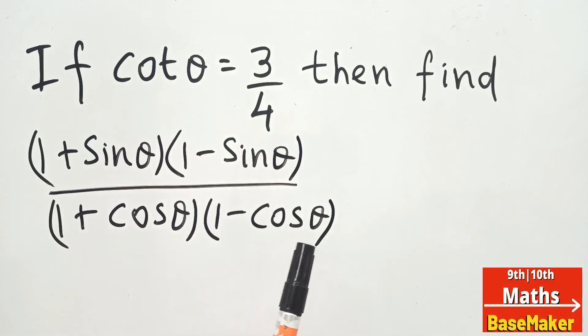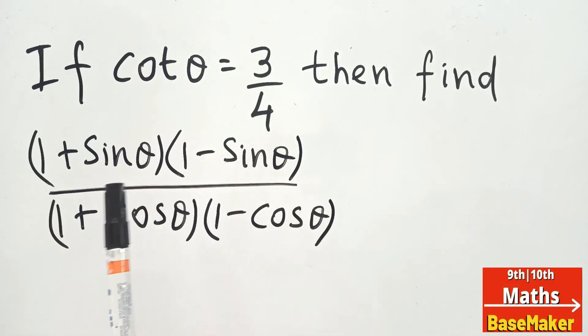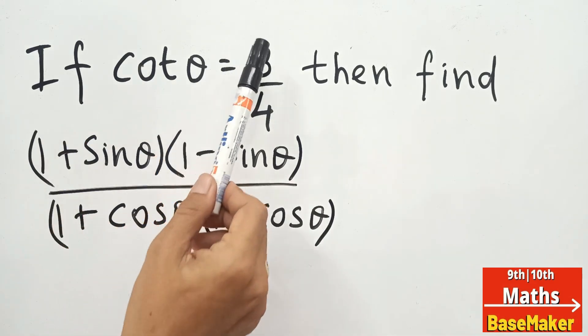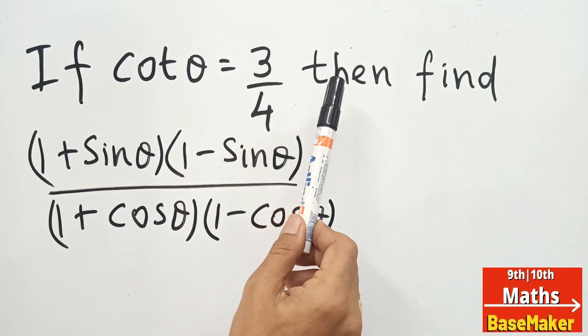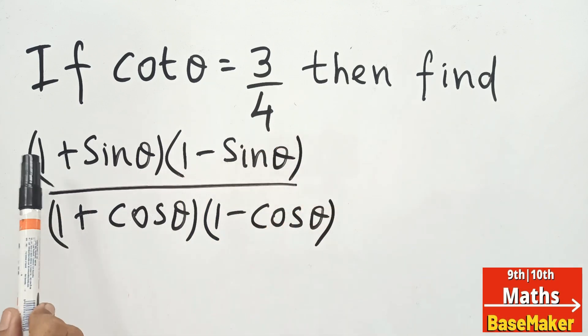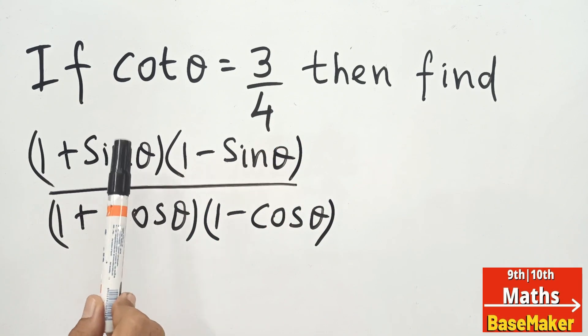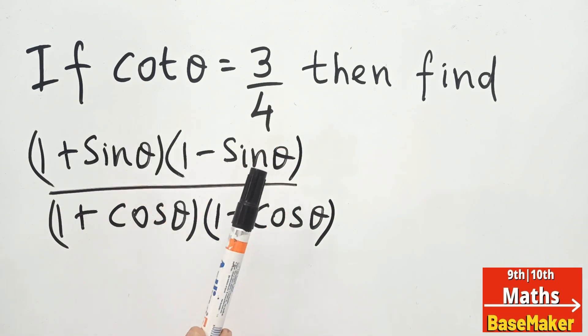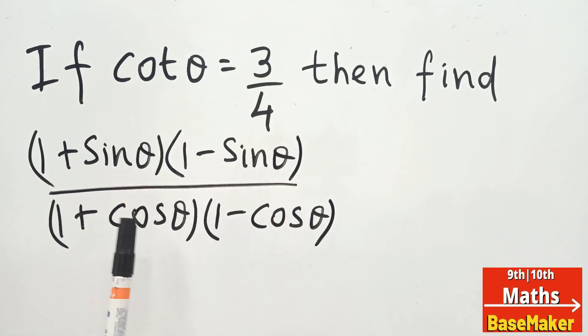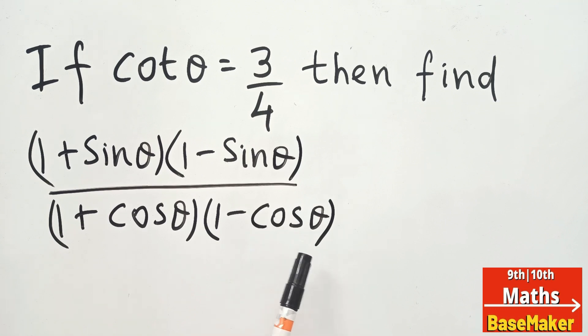Today we are solving numerical questions based on trigonometry. cos θ is equal to 3 upon 4. Find the value of (1 + sin θ)(1 - sin θ) upon (1 + cos θ)(1 - cos θ).